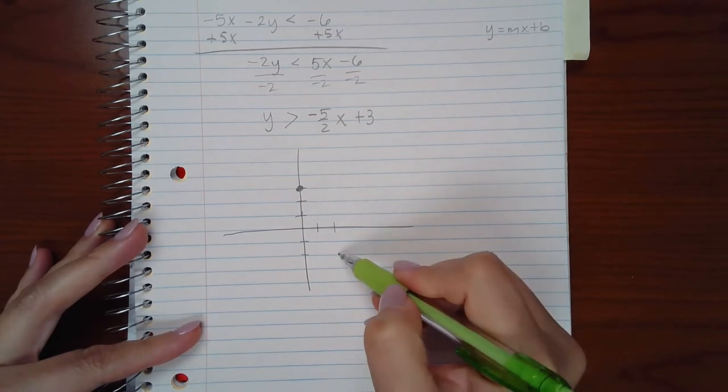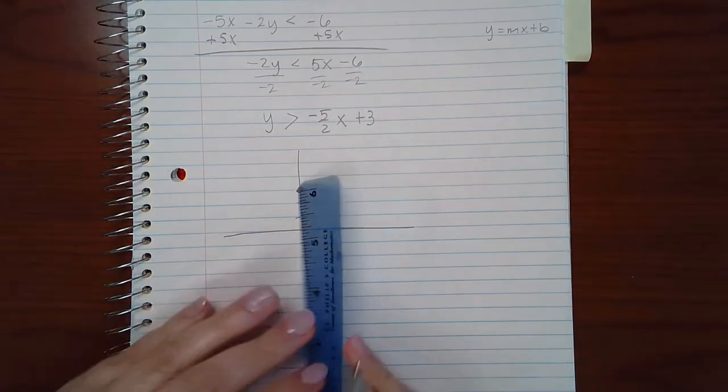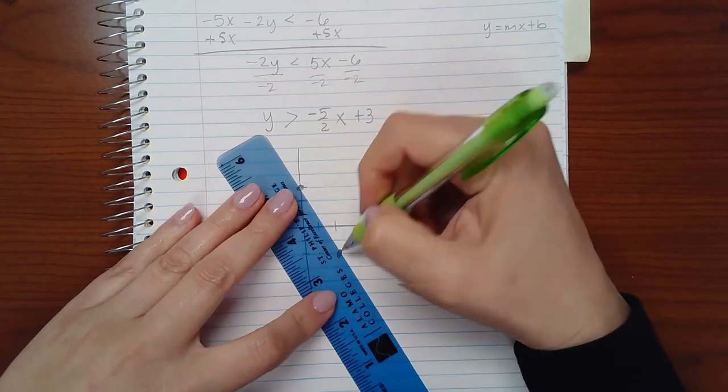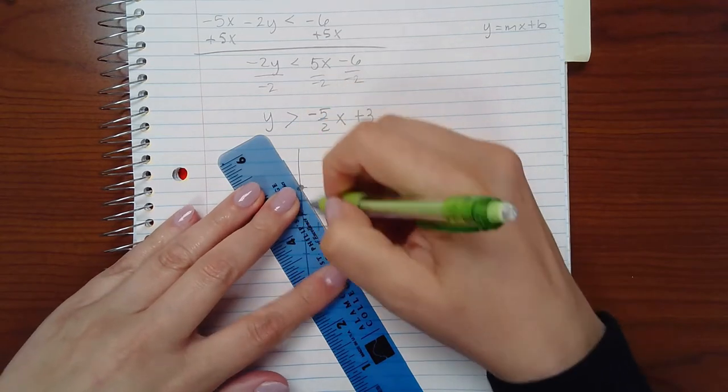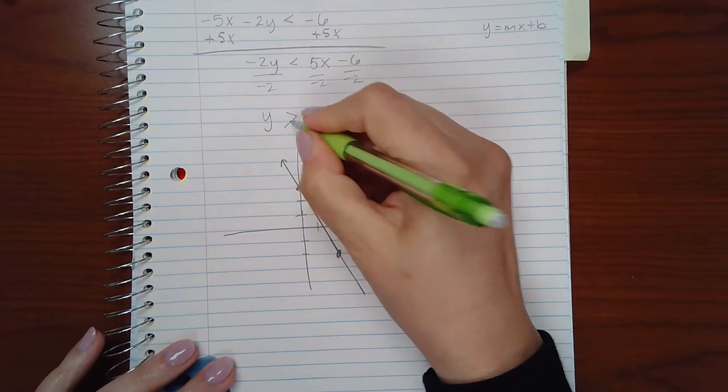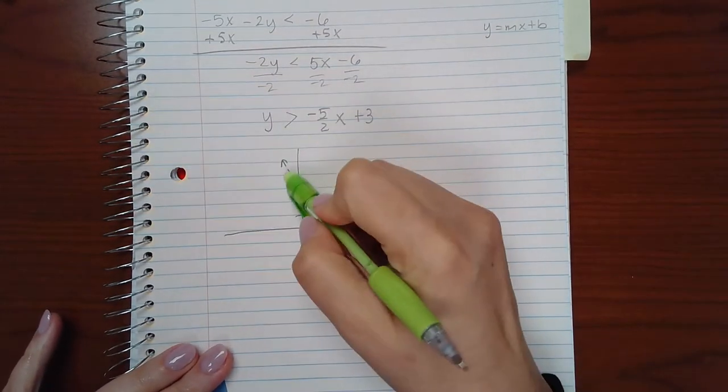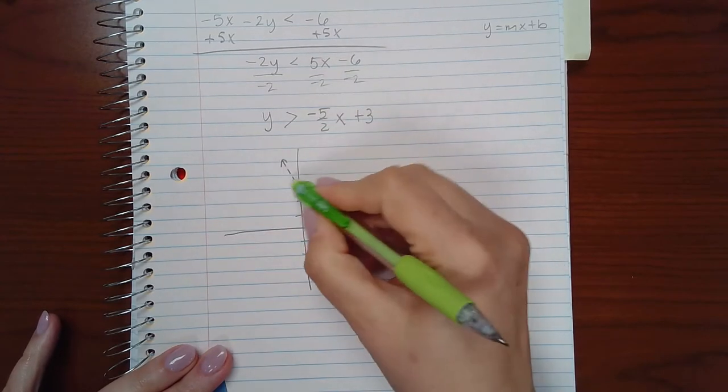And then I can trace the line. In the computer you can select the line and you'll have the line. And then because it does not have a bar on it, I will have to select the option to make it a dotted line.